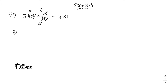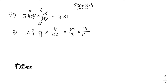Number 2: 14% of 16⅔ kg. 14% means 14/100. First convert the mixed fraction to an improper fraction: 16⅔ = 50/3. So we have 50/3 × 14/100. 50 cancels to 2, then 2 cancels with 14 giving 7, so the result is 7/3 = 2⅓ kg.